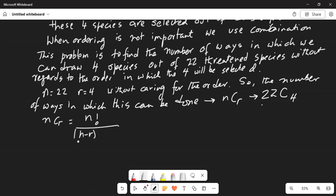n C r is given by n factorial divided by n minus r factorial times r factorial.